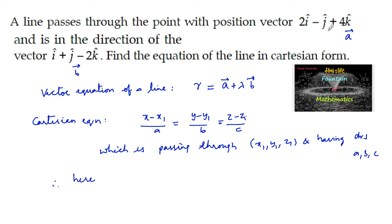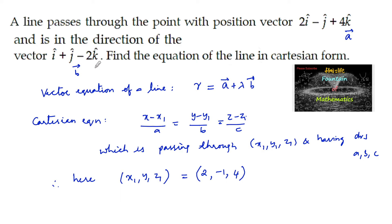Here, the position vector a passes through the point, so x1, y1, z1 = 2, -1, 4. The parallel vector is i + j - 2k, so we take direction ratios a, b, c as 1, 1, and -2.